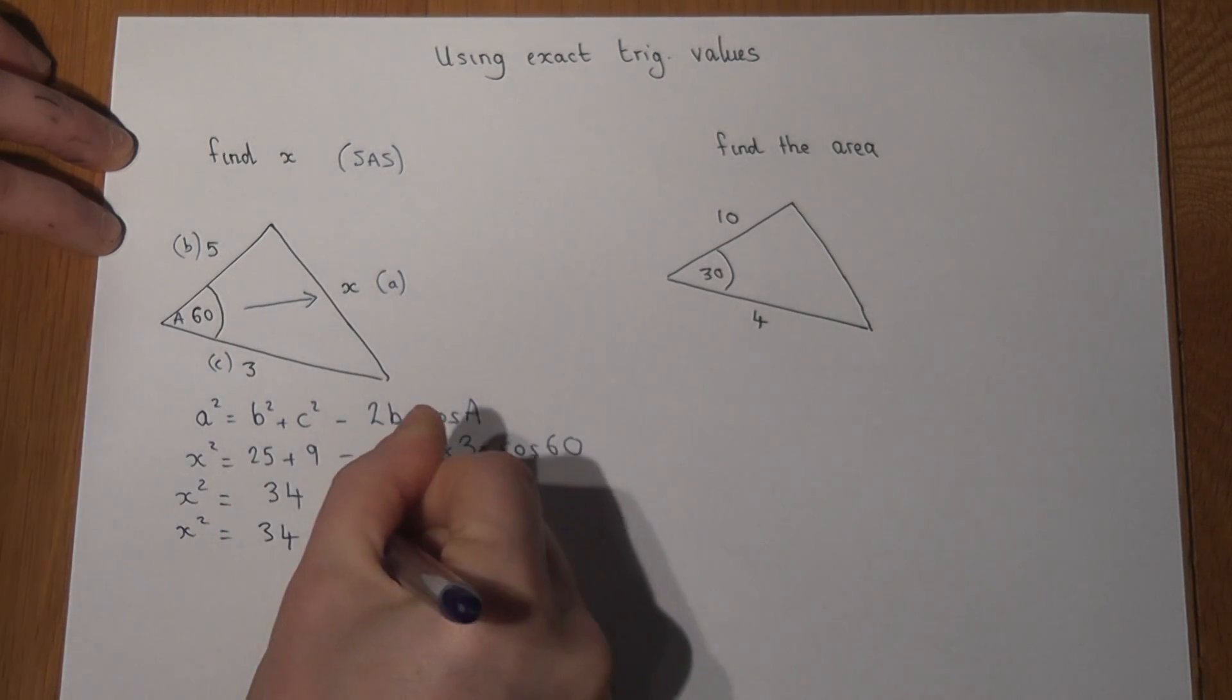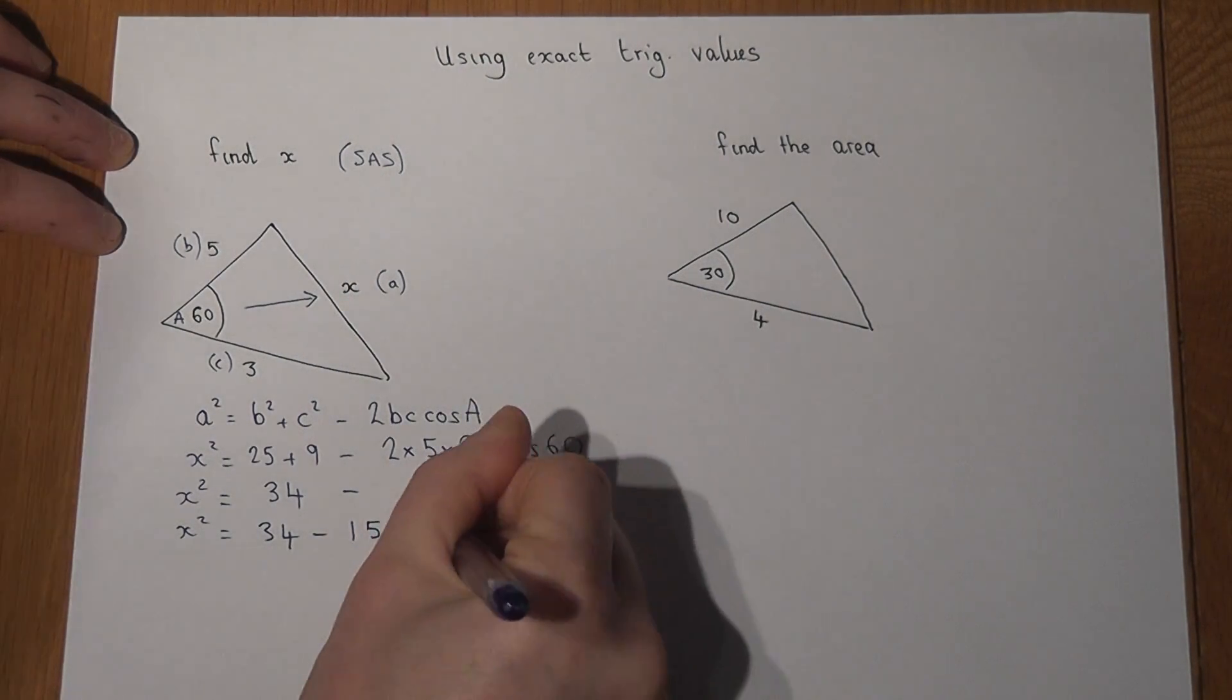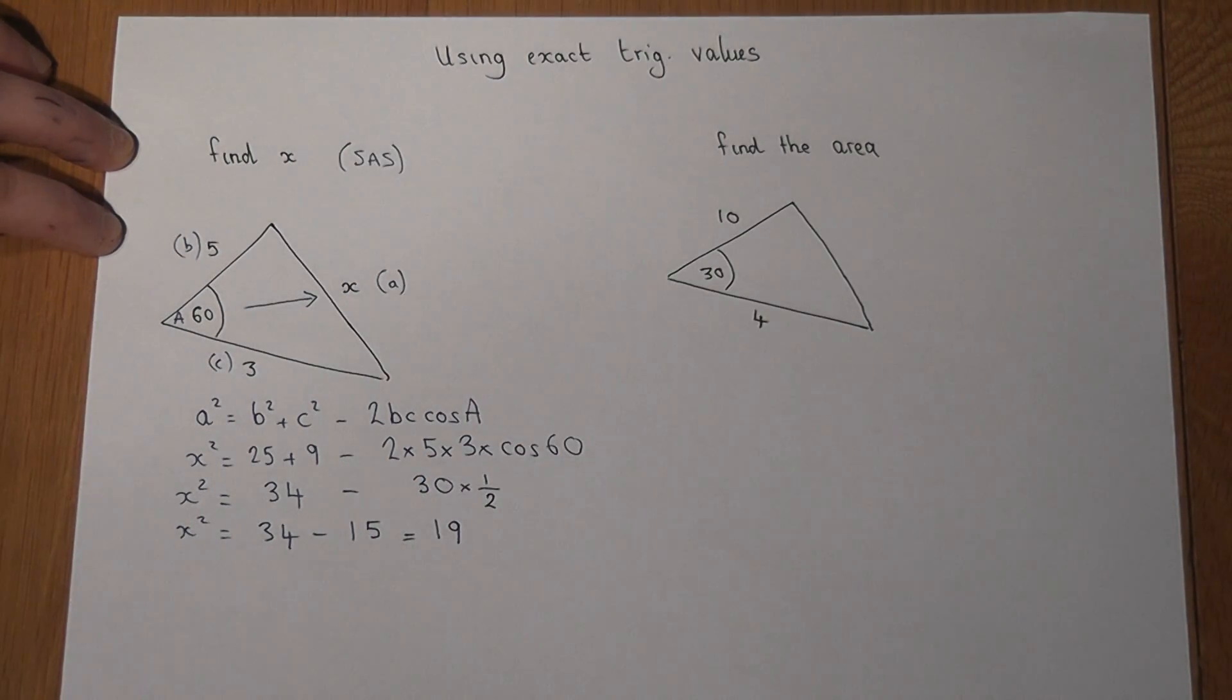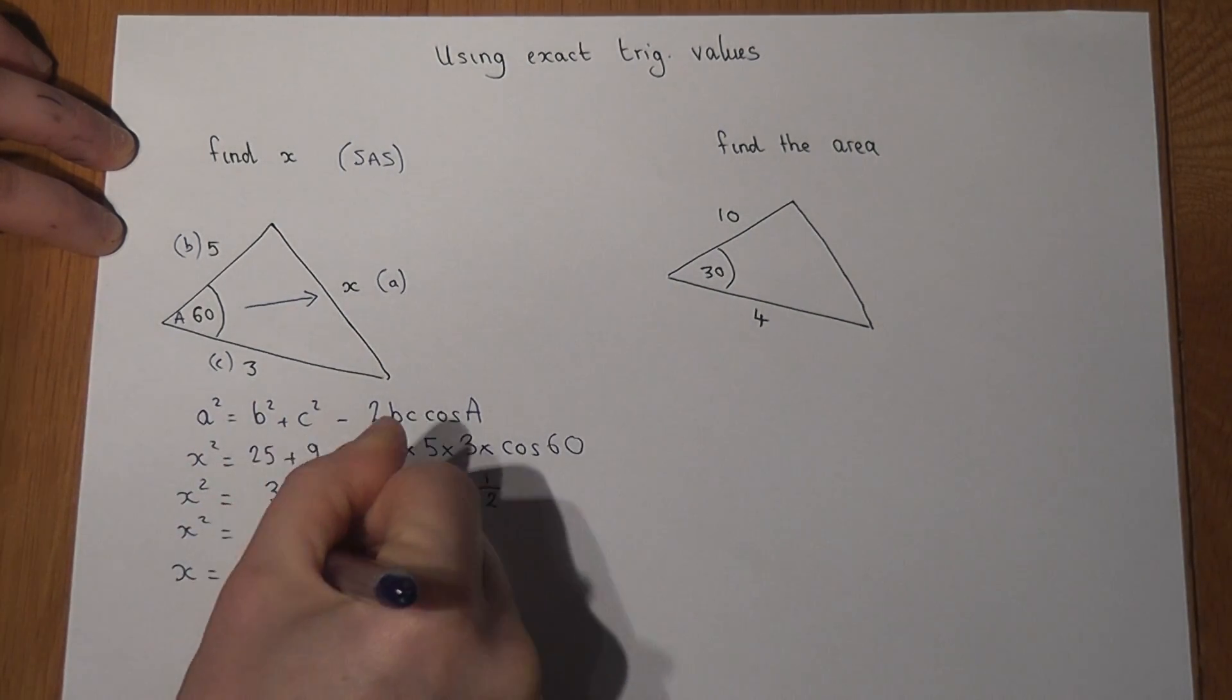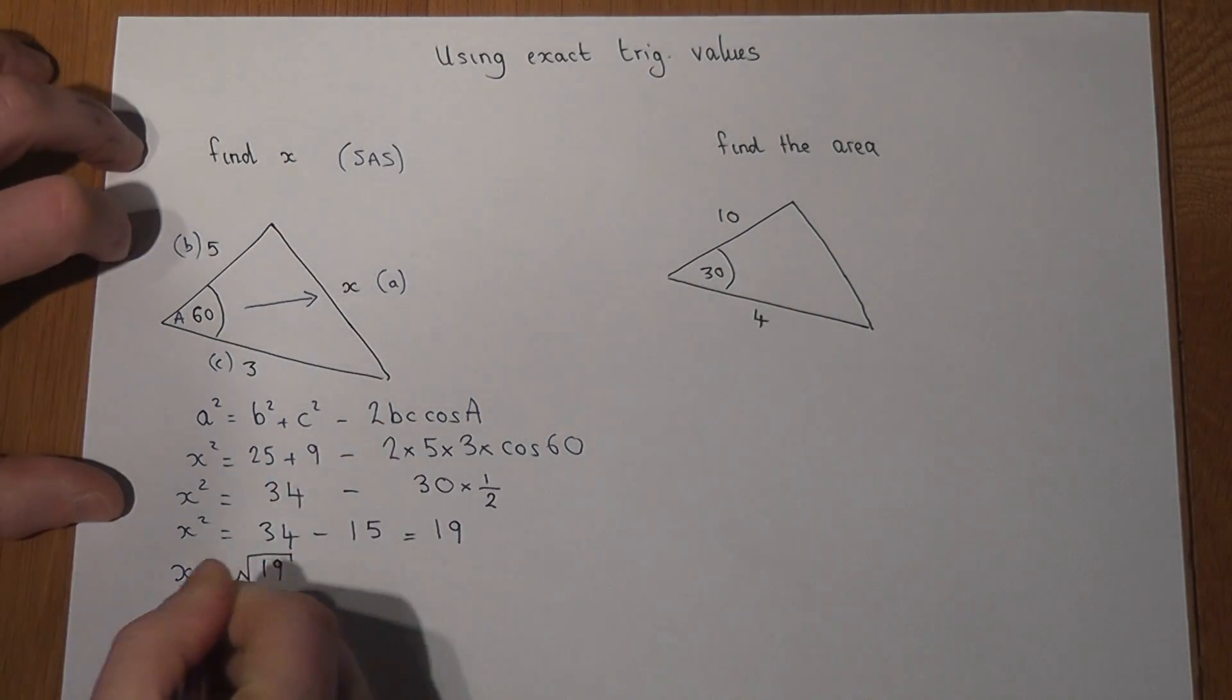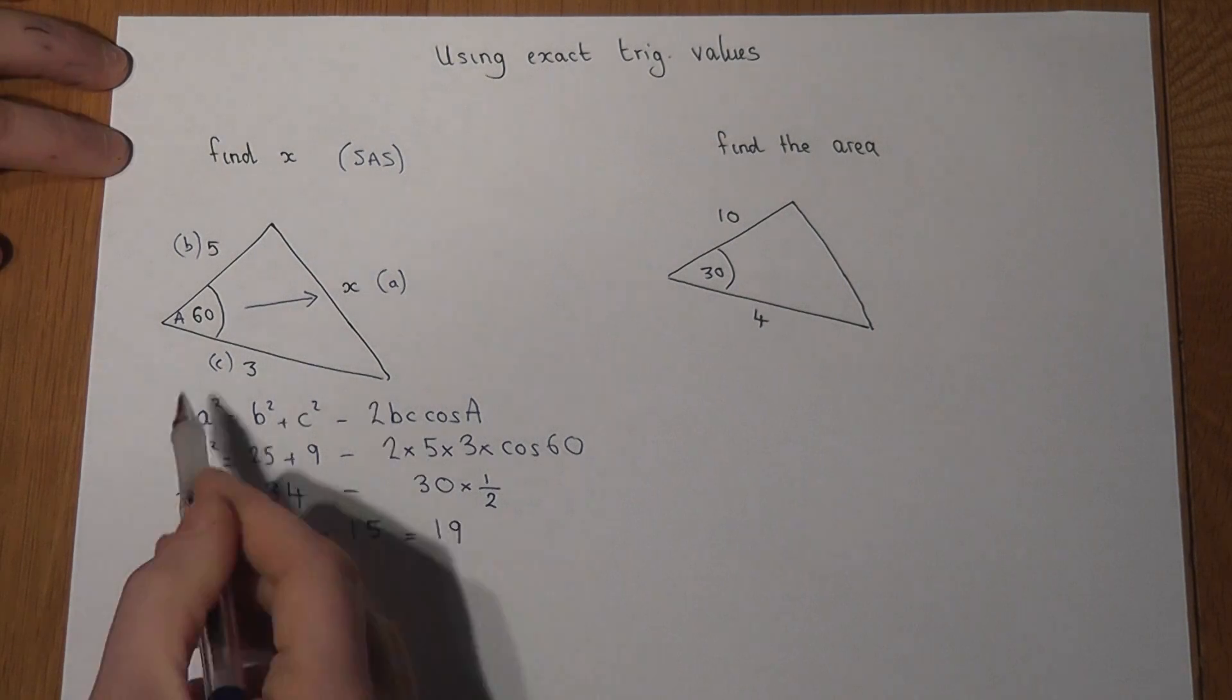So we have 34 take away 15, which just equals 19. So if x² equals 19, to find x I just need to find the square root of 19, which I can leave as a surd.